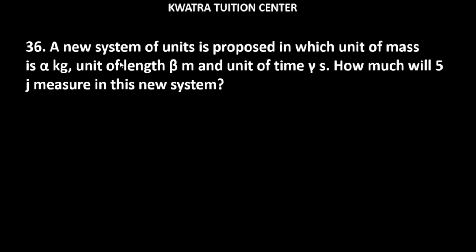Start with question number 36. It says a new system of units is proposed in which the unit of mass is alpha kg, unit of length is beta meter, and unit of time is gamma seconds. How much will 5 joules measure in this new system? So the measurement involves energy.